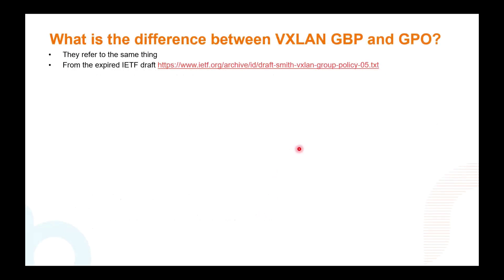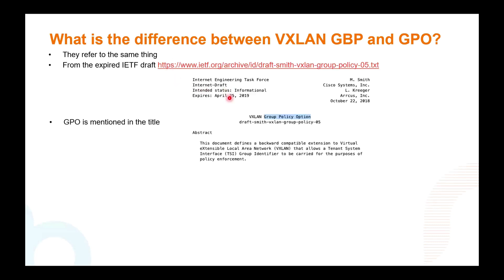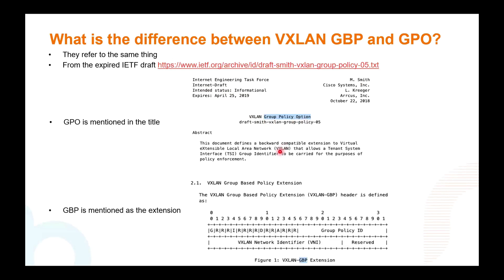You might be asked by customers what the difference is between VXLAN GBP and GPO. They actually refer to the same thing from an expired IETF draft — expired back in 2019. GPO, or Group Policy Option, was mentioned in the title, and further in the draft GBP is mentioned as part of the extension. The Group Policy ID is the GBP portion.